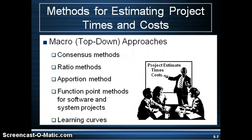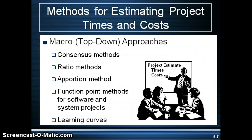There are different methods for estimating project times and costs. Starting with the top-down approach, first is the consensus method, which utilizes a pool of experienced senior management or expert judgment to estimate project durations and costs. This is where the Delphi technique may be used. The Delphi technique gathers input from experts individually so that participants don't know who the others are and therefore won't be influenced by others' opinions — this prevents something called groupthink.